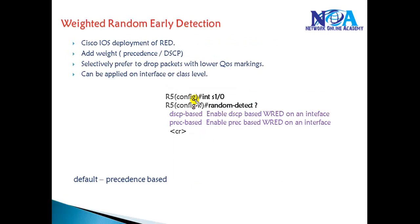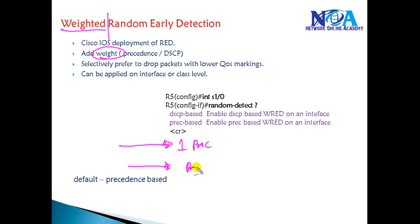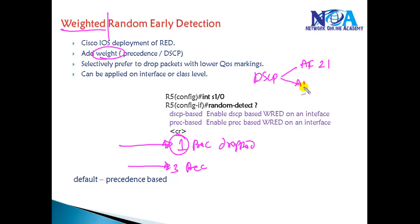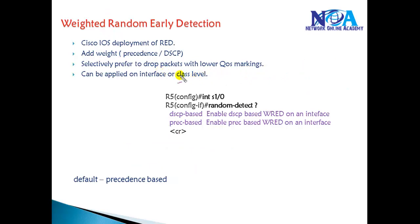Cisco has deployed something called Weighted Random Early Detection (WRED), where we apply some weight to specific kinds of traffic. Instead of dropping traffic randomly, we define weights — for example, traffic with a precedence value of 1 is more likely to get dropped than traffic with a precedence value of 3 because of its lower weight. It can also be based on DSCP values, where traffic with a lower DSCP value is more likely to get dropped. Packets are selected for dropping based on QoS markings or weight.